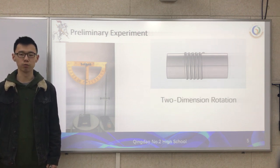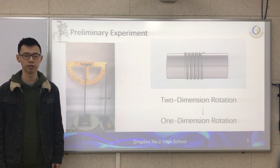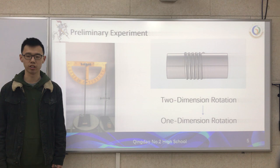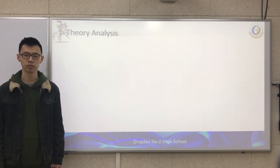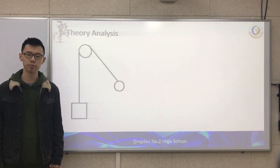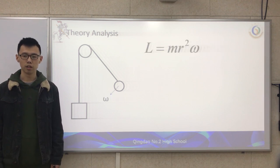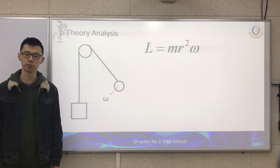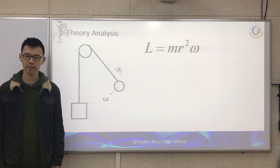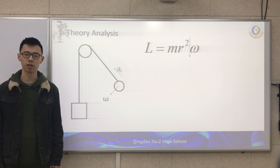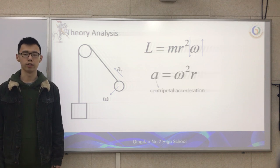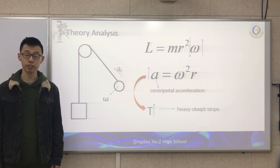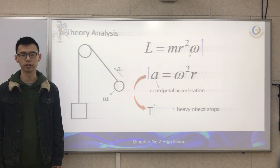In the experiment, we only move the light object a little away from the plane where the heavy object stays, so we cannot regard it as a full two-dimensional rotation. Based on the video, the light object has angular velocity omega, and by conservation of angular momentum of the light object, it has acceleration upward. As R decreases, omega increases, centripetal acceleration increases, leading to tension T increasing, and the heavy object will stop. But this equation can only help us analyze the motion qualitatively.